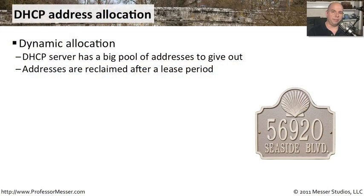A DHCP server can be configured to provide IP addresses in a number of different ways. One very common way is something called a dynamic allocation, where the DHCP server just has a big pool of IP addresses. When somebody comes onto the network, it assigns an IP address to that device. When the device lease period is up or the device leaves the network, that IP address is handed back to the DHCP server, and it can hand it out to someone else dynamically at any other time.